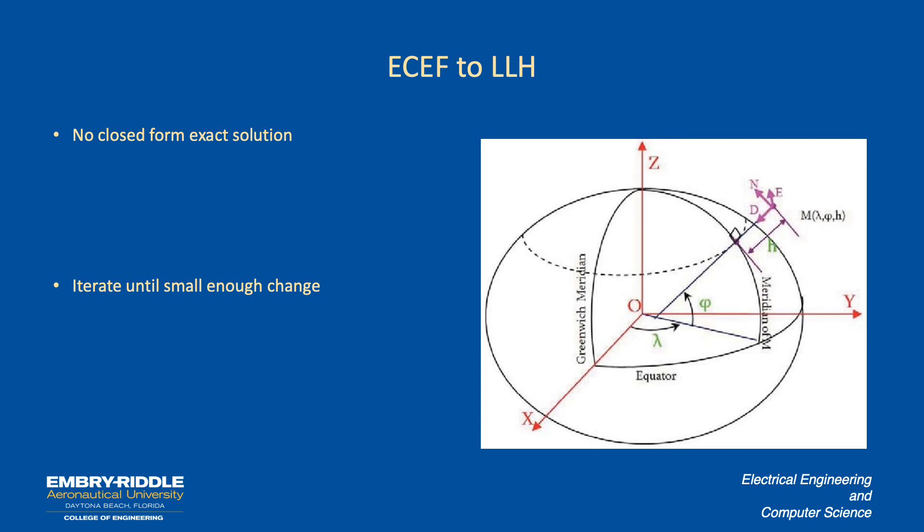So we can get the longitude back from our previous expressions for x and y since they both involved the same n times the cos of phi. Both of them involved n cos phi, one times sine of the y component times sine of lambda, the x component times cos of lambda. So we can take the ratio of y to x and get back the tangent of lambda so we can get lambda back from there. But to get phi and h, we have to iterate.